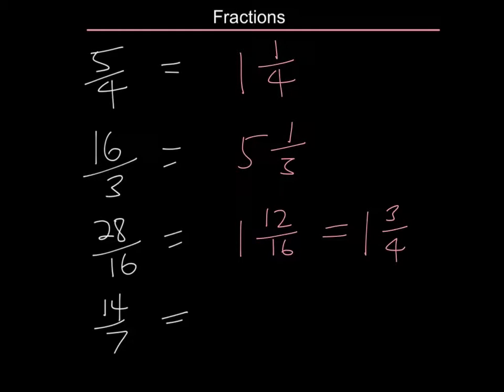For the last one, 14 divided by 7 actually goes 2 times and no remainder. And that's the same as just writing 2 because if I've got no sevenths, that means there's no fraction part.